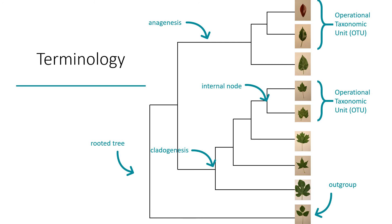Anagenesis occurs when evolution happens within a lineage, while cladogenesis is denoted by one species splitting into two. An internal node represents a common ancestor from which two species arise, but which is no longer in existence.